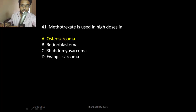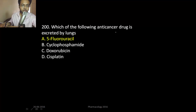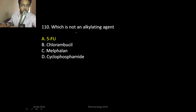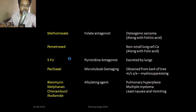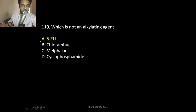MCQ review: Methotrexate in high dose for osteosarcoma — to reduce toxicity, give it with folinic acid and vitamin B12. If folic acid and vitamin B6 are given, use pemetrexate. Which of the following is excreted by the lung? Answer: 5-fluorouracil. Which of the following is not an alkylating agent? Answer: 5-fluorouracil, because it is a pyrimidine antagonist — an anti-metabolite, not an alkylating agent.